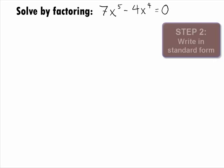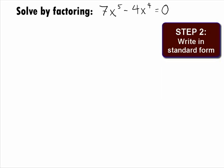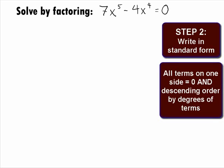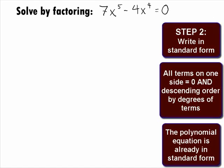In Step 2, we want to write this polynomial equation in standard form. This means we want to have all terms on one side set equal to 0 and write it with the powers in descending order. The polynomial equation is already in standard form.